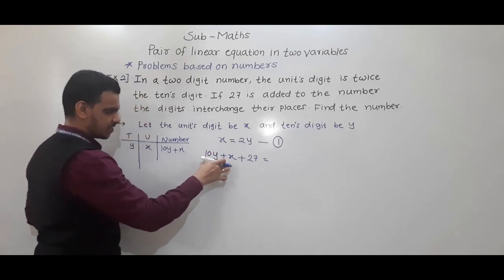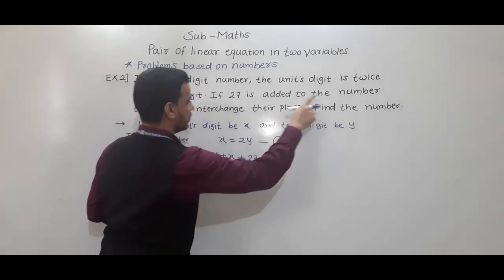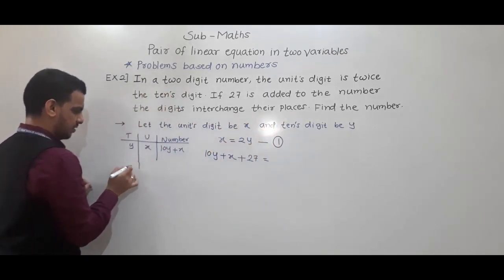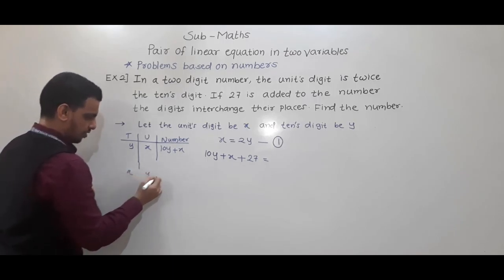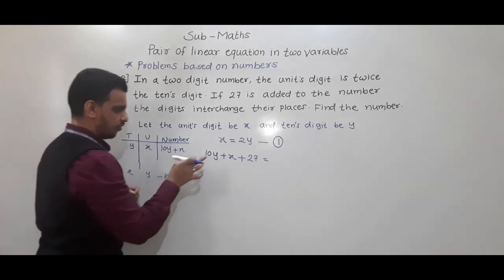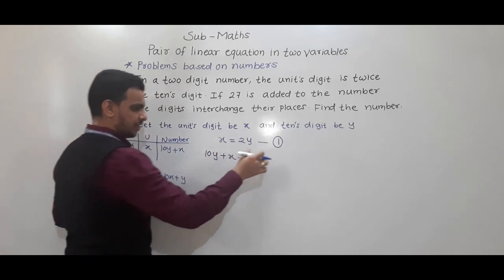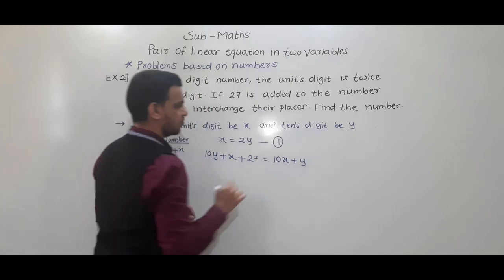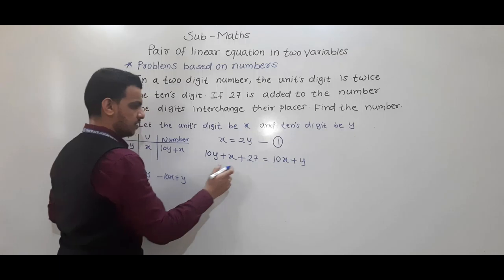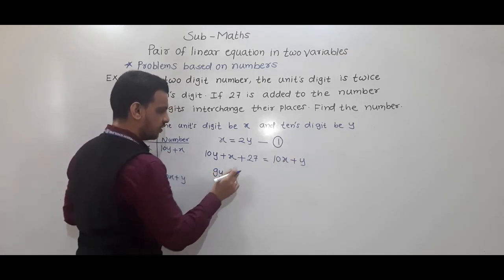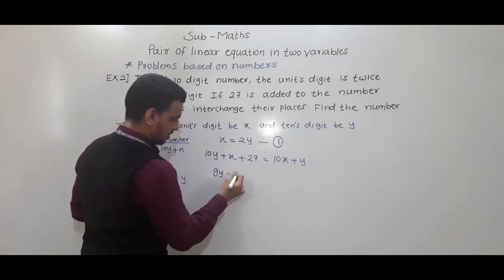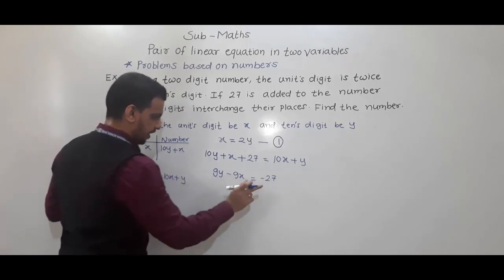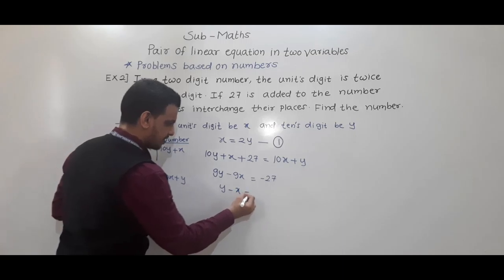If 27 is added to the original number 10y plus x, the digits interchange their places. So we get the new number 10x plus y. The equation becomes: 10y plus x plus 27 equals 10x plus y. Shifting 27 to the other side gives us the second equation.